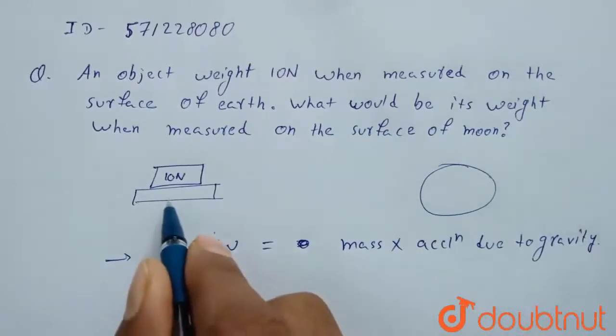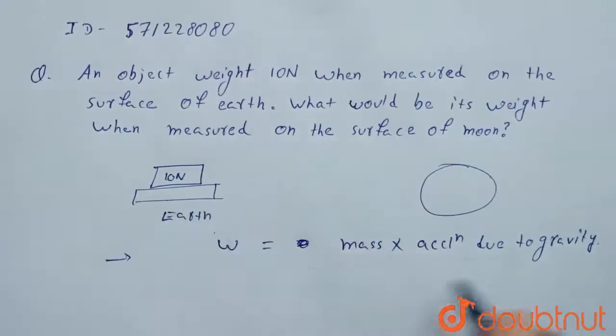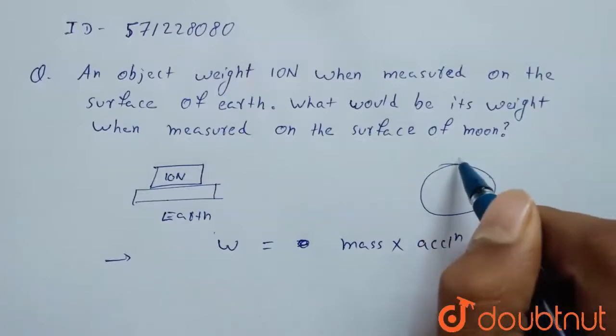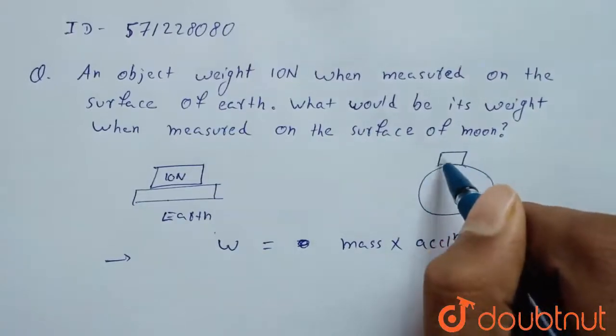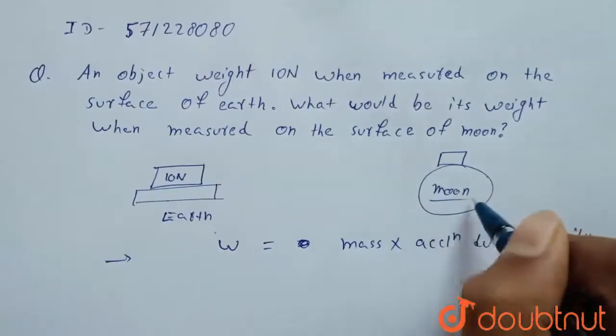Suppose for earth, we have to take acceleration due to gravity of earth. And for Mars and for moon, we have to take acceleration due to gravity of moon.